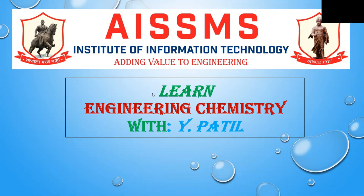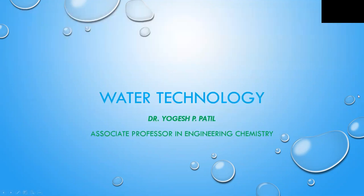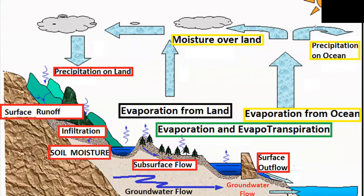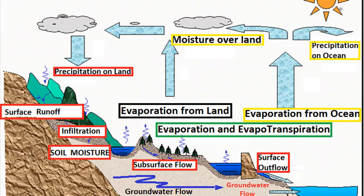All of us are familiar with the hydrological cycle, which is basically studied in school days. Surface water is evaporated due to solar energy, and the vapors get carried up into the atmosphere. At higher levels, the cooling effect converts gaseous water vapors into droplets — condensation takes place — and we receive that water in the form of rain.